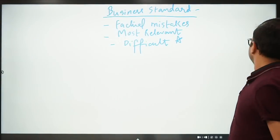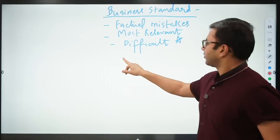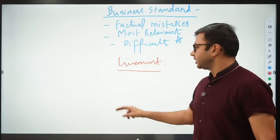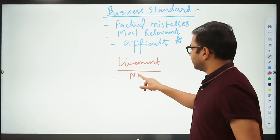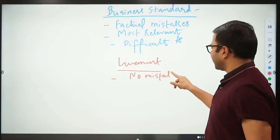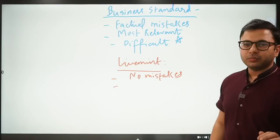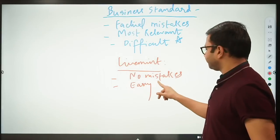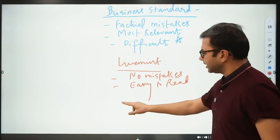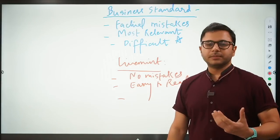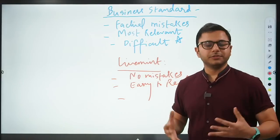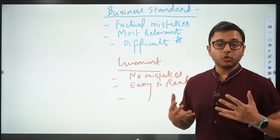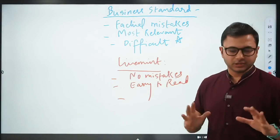Now let's come to the second newspaper, which is LiveMint. What are the problems and good things about this newspaper? The best thing is that you won't find mistakes in the newspaper. Very rarely will you find any mistake, but 99.9% of the times, we don't see any mistake. It's very easy to read. That's another advantage about LiveMint. It's written in a very simple way.